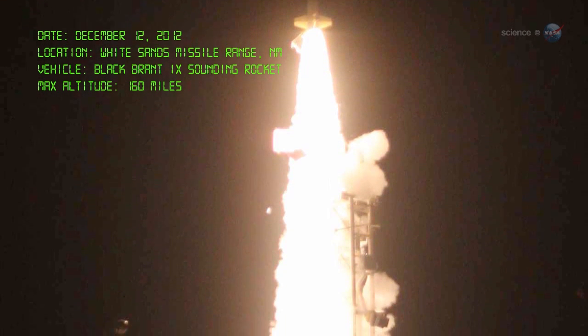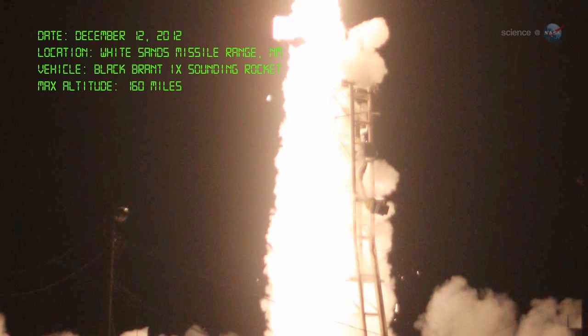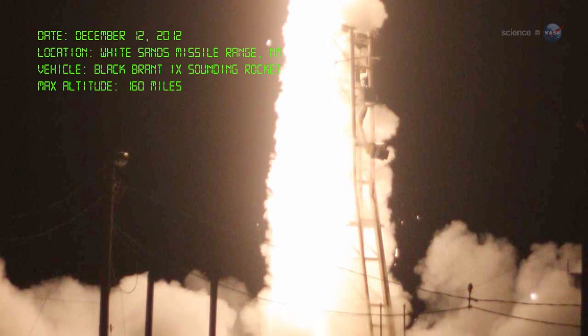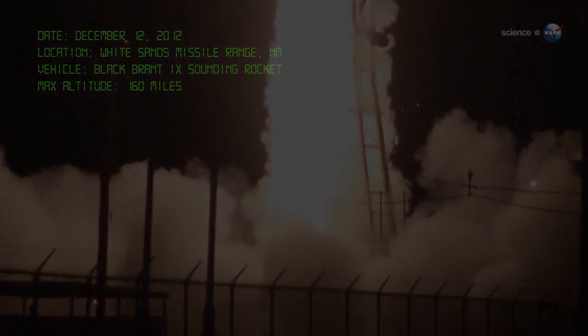The rocket reached a peak altitude of 160 miles and spent five minutes above the Earth's atmosphere. That was all the time they needed to measure the amount of charge exchange X-rays inside the solar system.